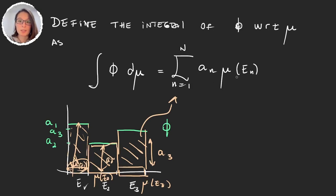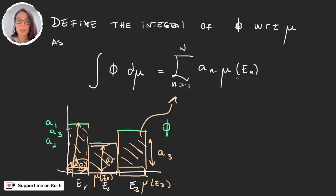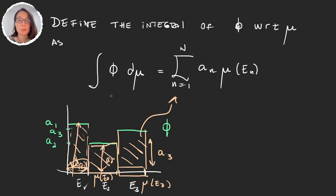It's just height times length of the base. This may seem natural for real numbers, but remember we're working with an abstract set X, an abstract sigma algebra, and an abstract measure. Even so, when we integrate with respect to Lebesgue measure we recover the usual definition of the integral — with the only difference being how we measure the length of the base.